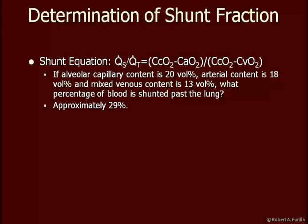If, on the other hand, the content of arterial oxygen was the same as the content of venous oxygen, then CcO2 - CaO2 divided by CcO2 - CvO2 would, in fact, be one. And that means a hundred percent of the blood had been shunted. Anything in between there can be calculated using these contents.